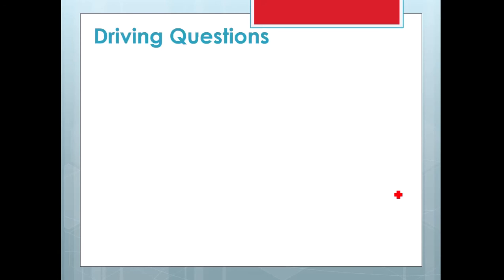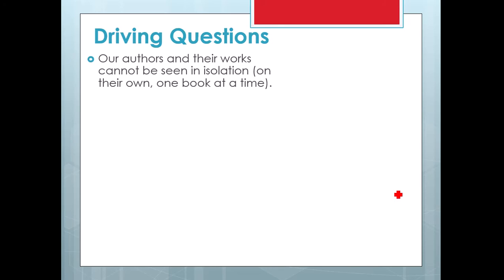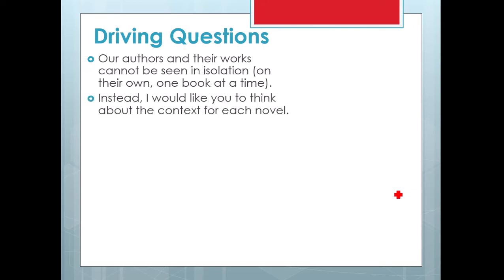Before I get into the timeline and explain each different literary movement, I want you to think about what is going to be one of the driving questions for our course. Our authors and their works cannot be seen in isolation. As I'm recording this in 2020, there are a lot of issues about the past and people who were thought of as wonderful people and heroes of American history or American literature. And then as we look back at them, we say, well, this person did some things well, but they also had very racist views, or maybe they believed in gender stereotypes, or maybe they were in some way problematic. But what I want you to do for this course is think about the context in which the author is writing.